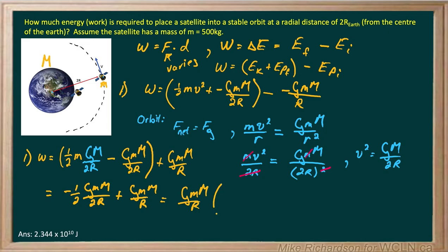So when I factor out a G M M over R, the first term becomes negative 1 quarter, right? Because I've still got the half and I've got the 2 in here. So it becomes negative 1 quarter. And the second term simply becomes 1. Now, negative 1 quarter plus 1 is 3 quarters. So my overall answer becomes 3 quarters of G M M over R.